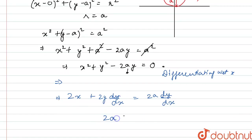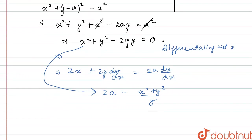2ay from here, this 2ay from this, we have 2ay equals x square plus y square by y. Now let's say this is our equation number 1.